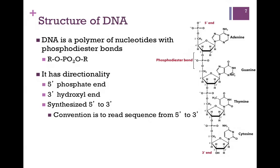DNA is a polymer of nucleotides, and they're joined together by phosphodiester bonds. Remember, an ester bond is a C double bond O, OR bond, but in this case we have phosphorus, so it's a phosphoester. And since we have one phospho connecting two nucleotides together, it's a phosphodiester.